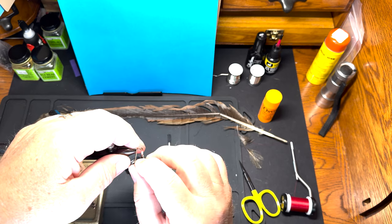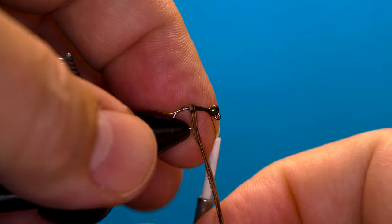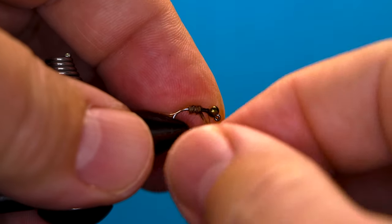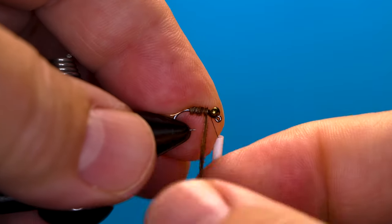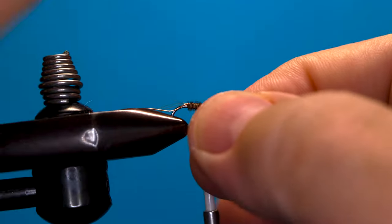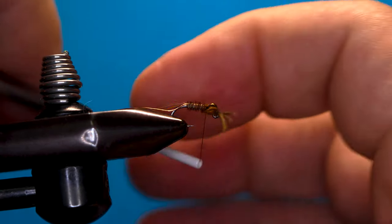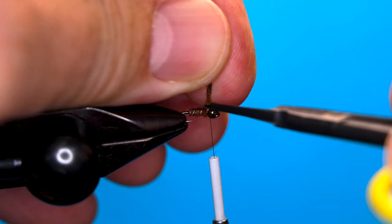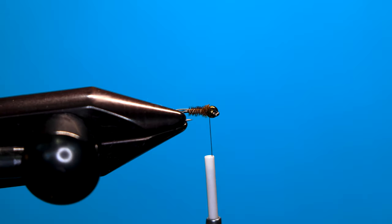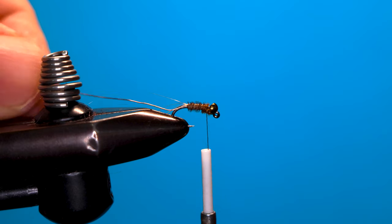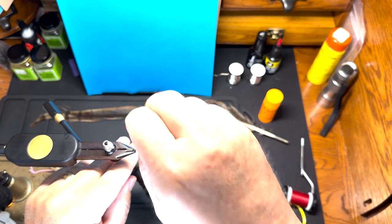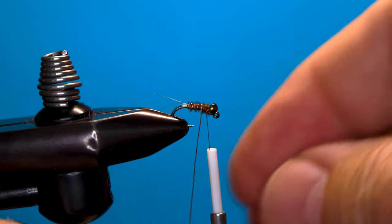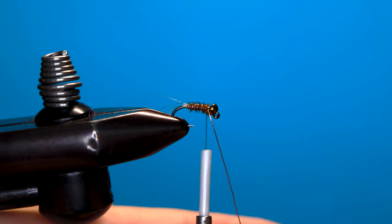Wind in our pheasant, then trim that. With the copper wire, we're going to go counterclockwise, and that makes the pheasant tail fiber a lot more durable so you won't mangle the fly on the first fish you catch.